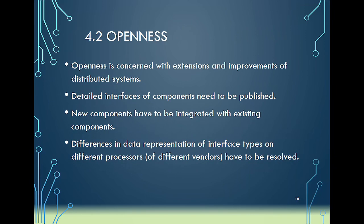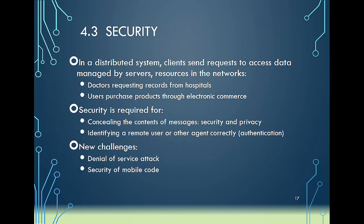Openness is concerned with extensions and improvement of distributed systems — for example, with an ATM machine where you can always add some kind of interface. New components have to be integrated with existing components without experiencing incompatibility issues. Regarding security, we must protect the confidentiality of data, ensure availability at all times, and uphold the integrity of data to prevent data breaches. For instance, if a doctor requests records from a hospital, confidentiality must be upheld, so servers need to be very secure.